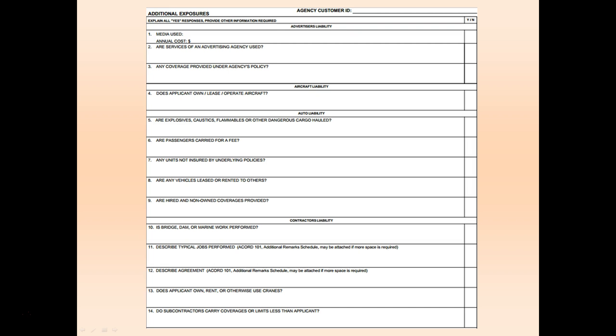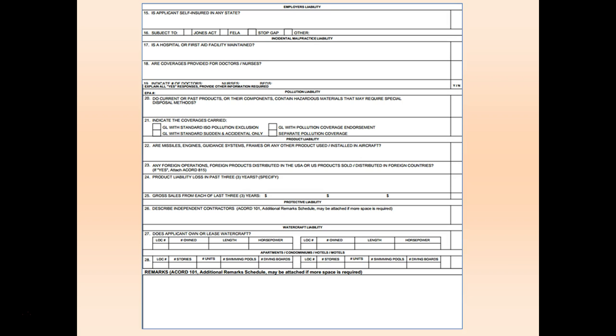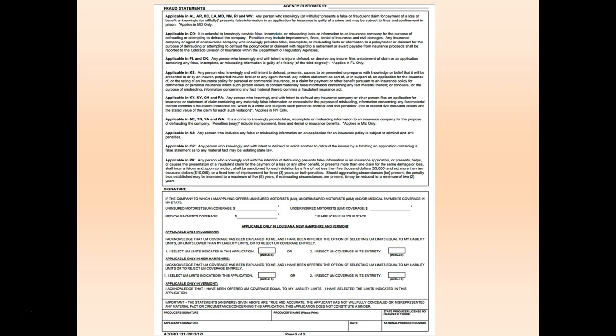On pages 3 and 4 of the Accord, you'll see that the next 28 questions are broken down into 10 different types of liability exposures that may be applicable to the insured. You'll need to respond with a yes or no answer only to the sections that pertain to the insured. The final page of the Accord 131 is the signature page. Please have your insured sign the application verifying the accuracy of the information provided.